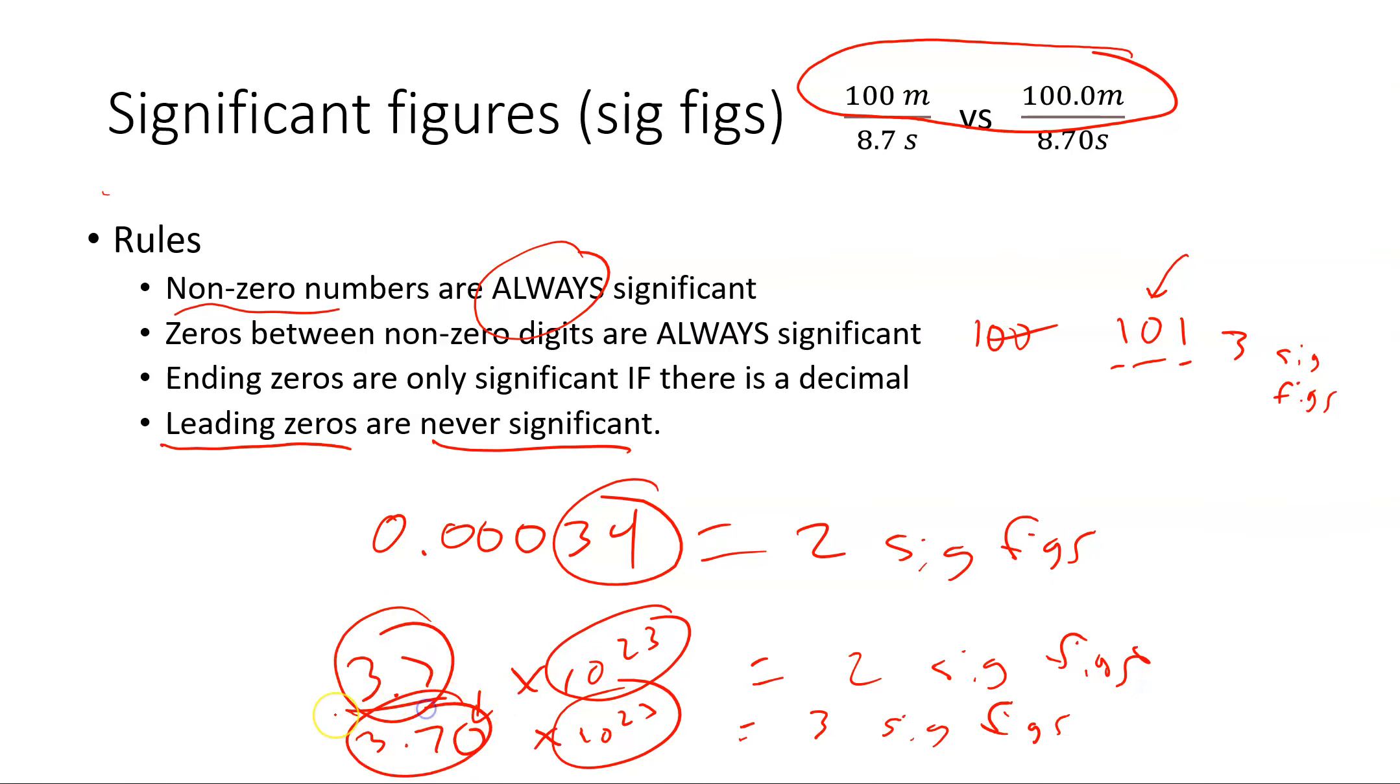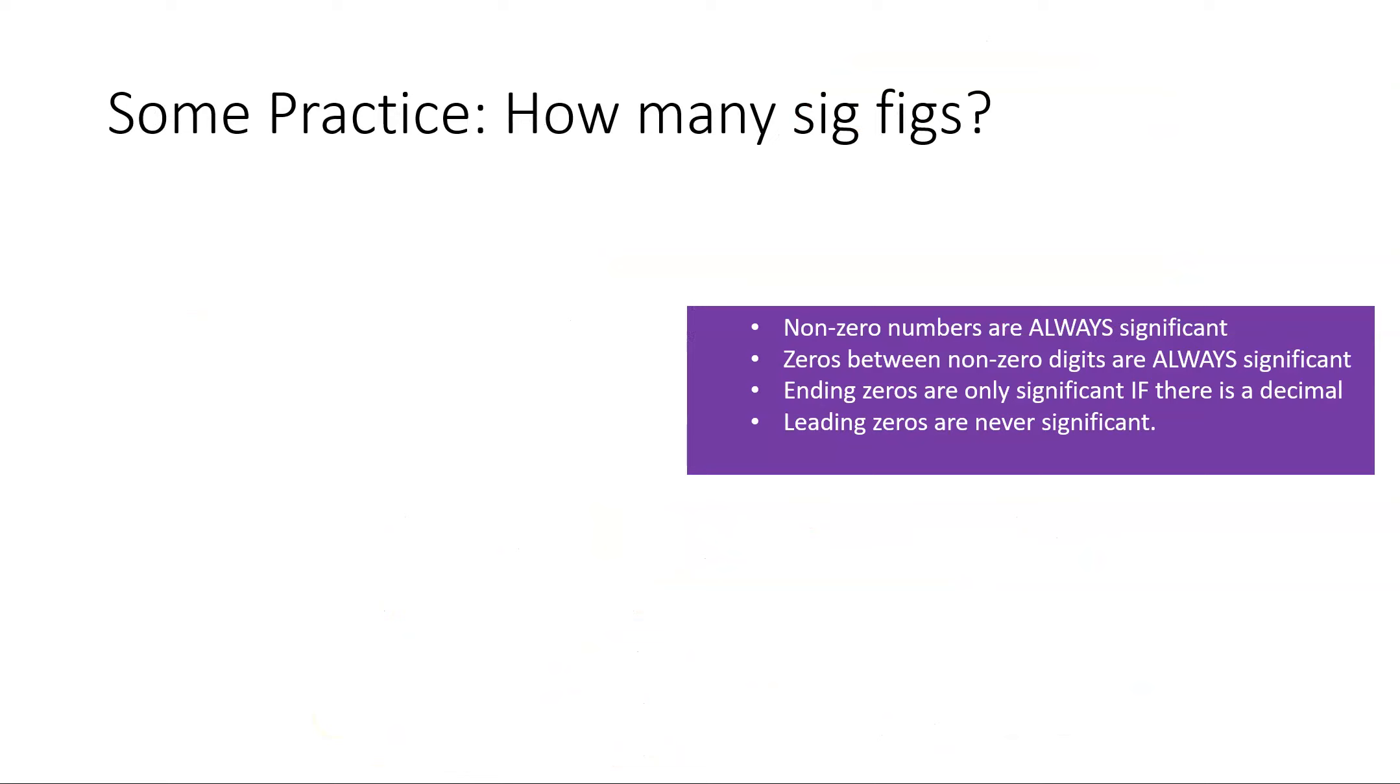All right, that being said, how many sig figs are in the following numbers? We're going to keep these rules right here and quickly walk through what that looks like. So the number 300: we have the three, that's automatically one. Are those two zeros significant? They're ending zeros and no decimal, so there's one sig fig there. Now if I measure 300 to 300.00, because we have ending zeros and there is a decimal, we all of a sudden have one, two, three, four, five sig figs including that three.